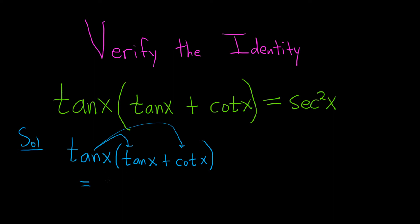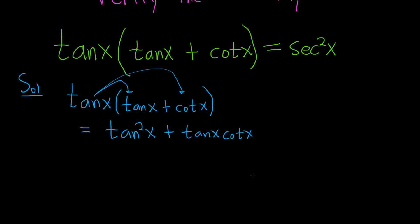Tangent times tangent is tangent squared, and then plus tangent times cotangent of x. Just distributing the tangent function.